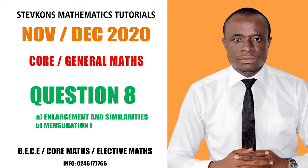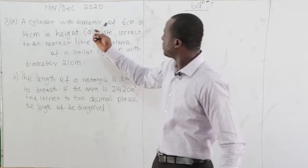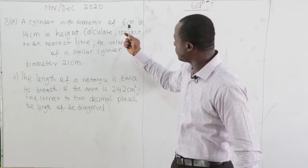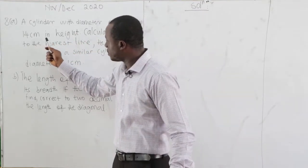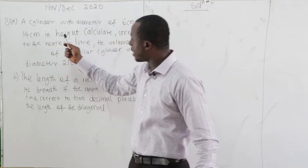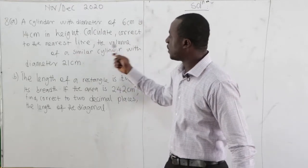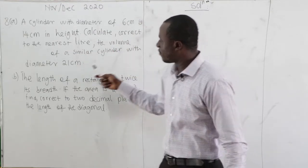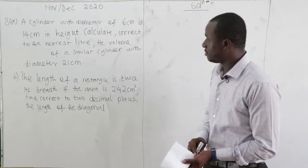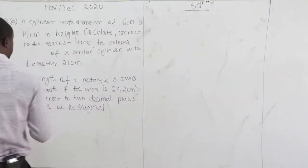November 2020, Question number 18. A cylinder with diameter of 6 cm is 14 cm in height. Calculate correct to the nearest litre the volume of a similar cylinder with diameter 21 cm. So we have two cylinders: one with diameter 21 cm and the other with diameter 6 cm.